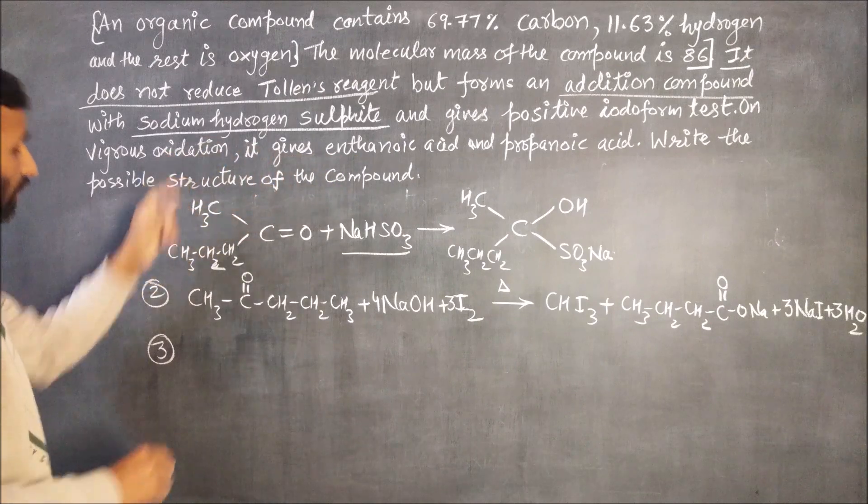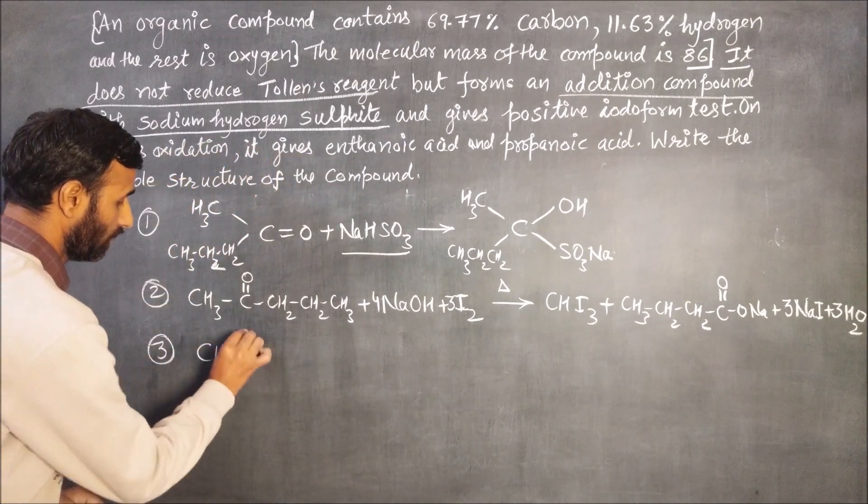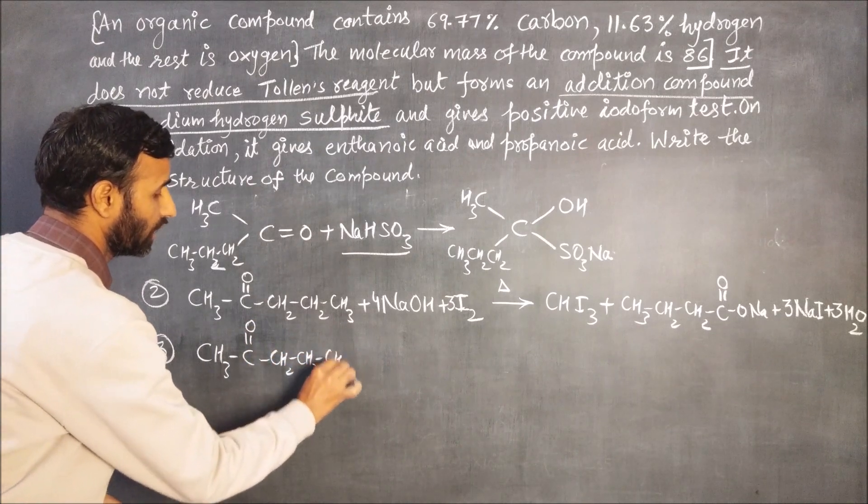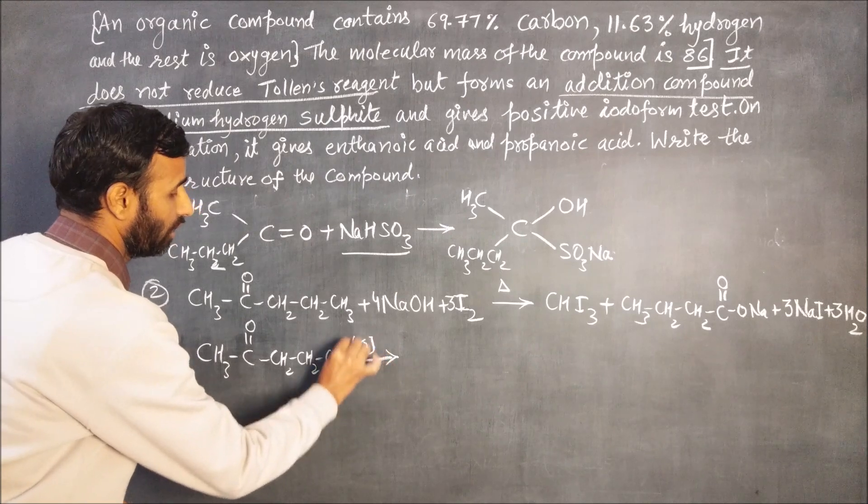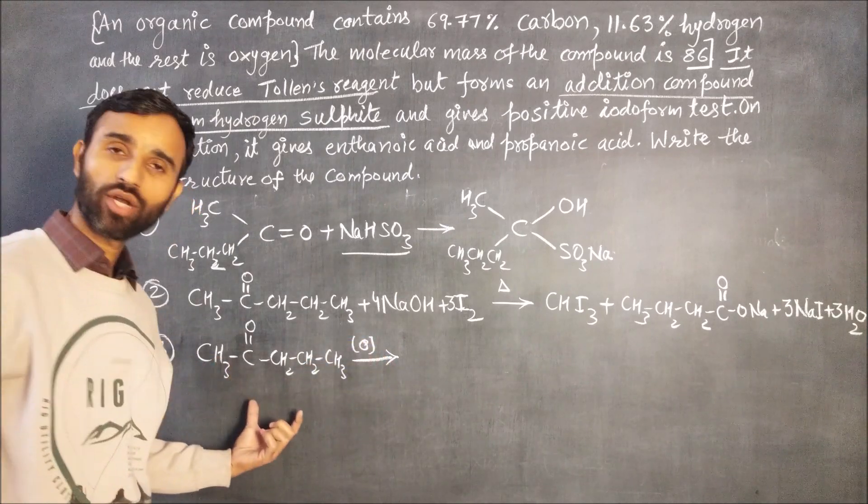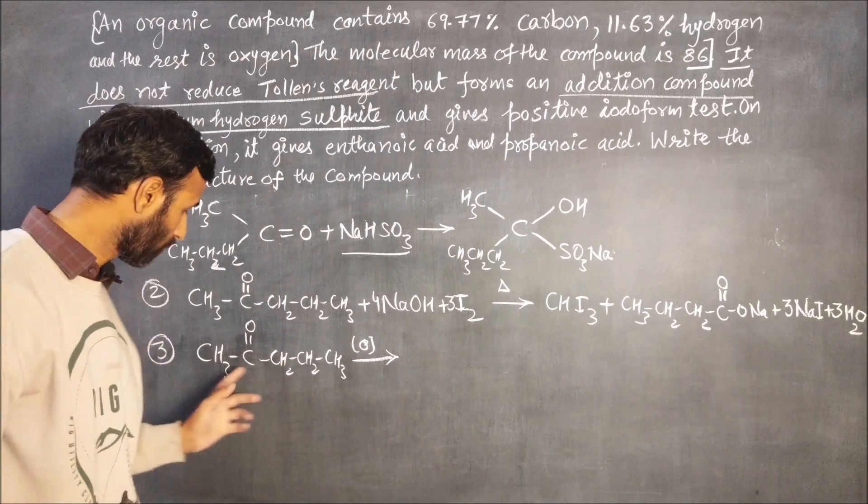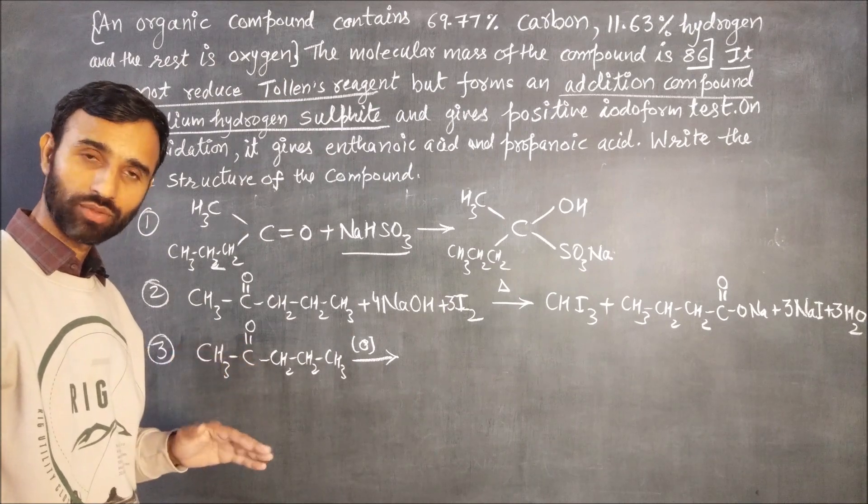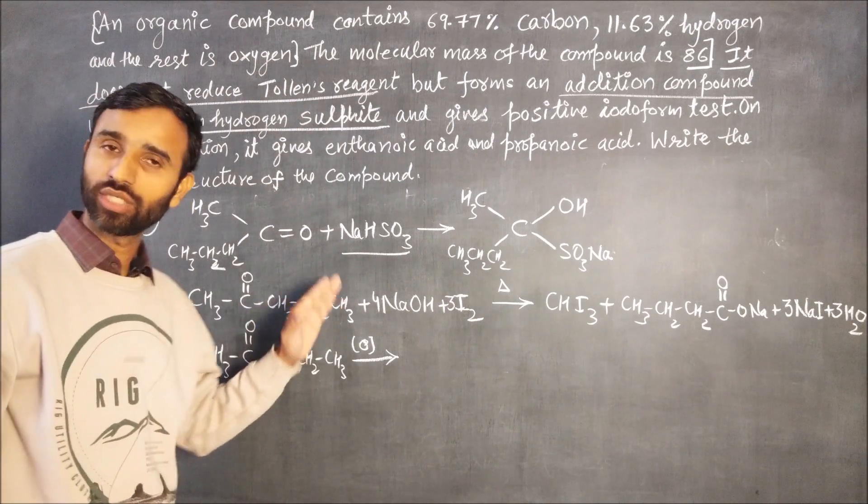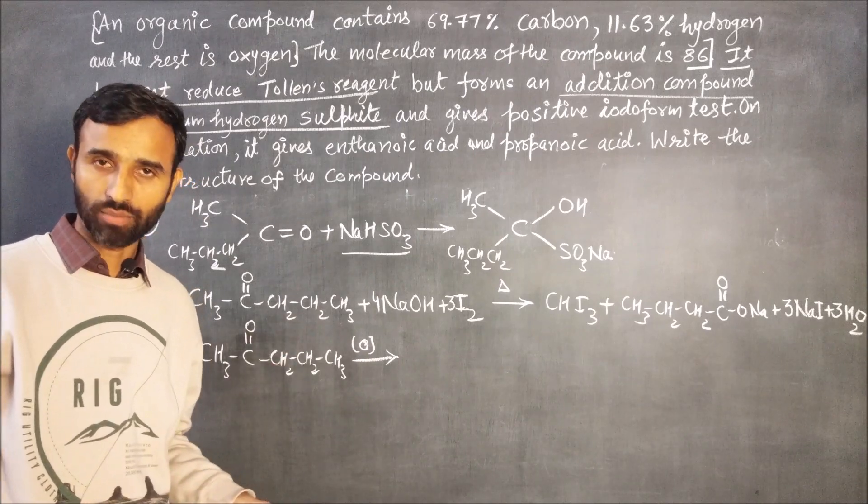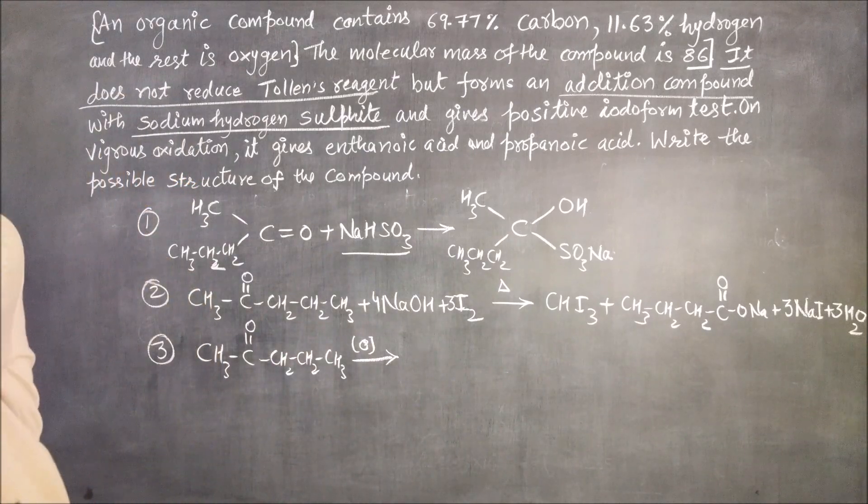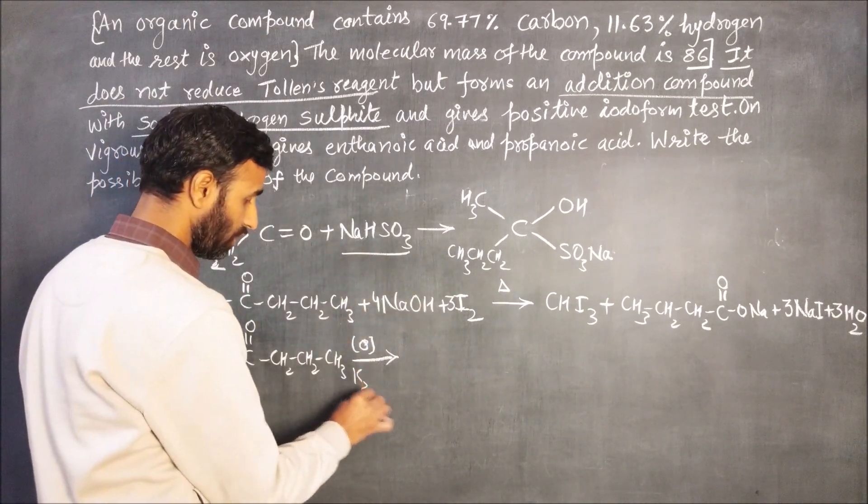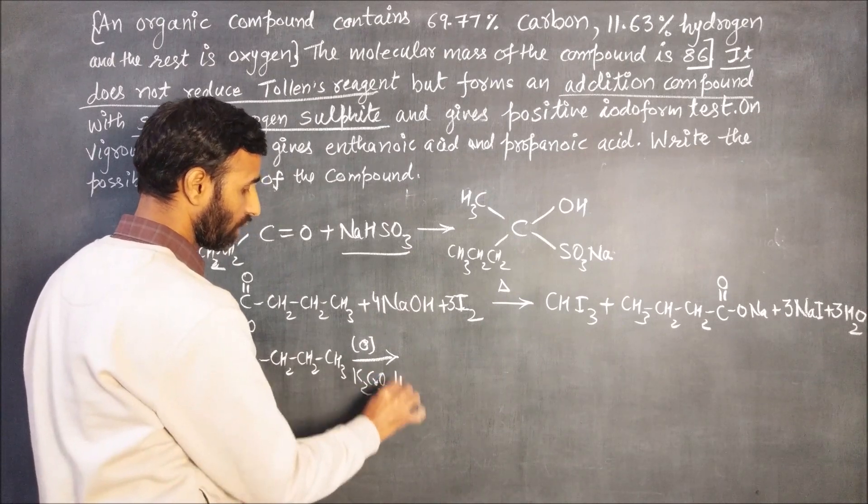Now third part, on vigorous oxidation. CH3-C=O-CH2. Vigorous conditions are required because ketone cannot be oxidized under ordinary conditions because it leads to the breaking of carbon-carbon bond. So strong oxidizing agent like K2Cr2O7 with H2SO4.